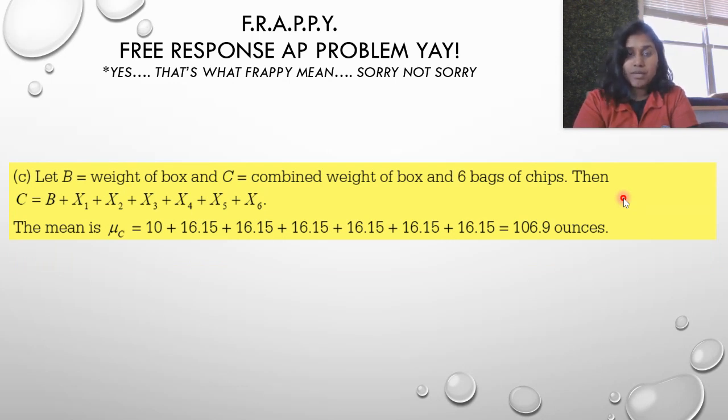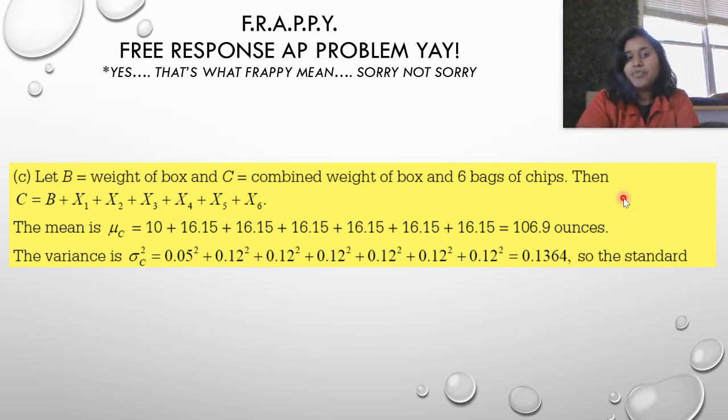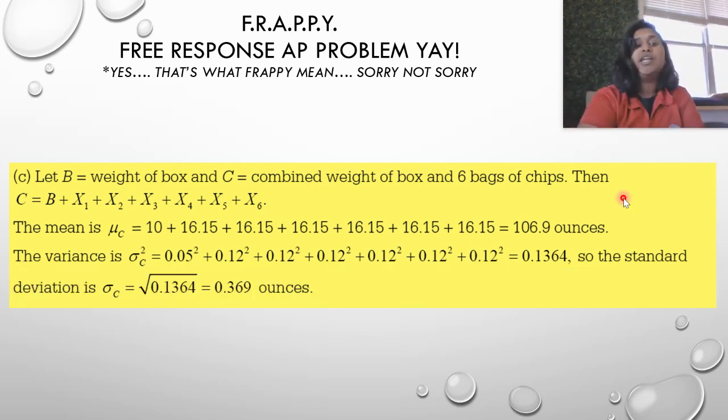To get the standard deviation, remember when we're combining and dealing with discrete variables, we can't just add a bunch of standard deviations. It doesn't work that way, but I can do it with the variance. The variance is just the square of the standard deviation. If I deal with the square of each of those values, I can add them. The standard deviation of just the weight of the box was 0.05, so 0.05 squared becomes the variance. The standard deviation of each bag of chips was 0.12, so 0.12 squared becomes the variance.